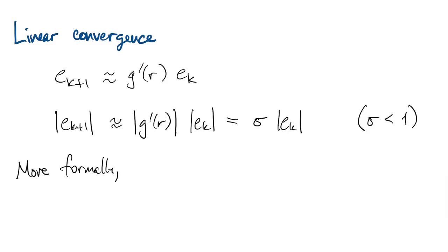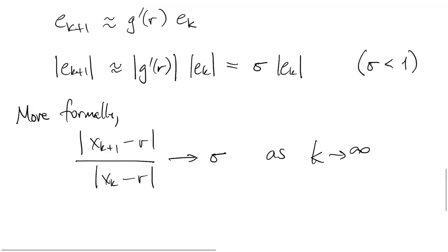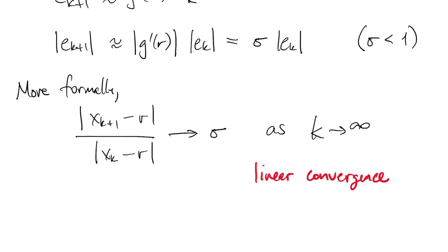And if we want to be more formal about things, we look at the ratio of successive errors and you can show that that must approach sigma as k goes to infinity. And this is what we mean as the definition of linear convergence.